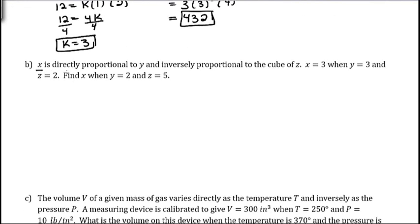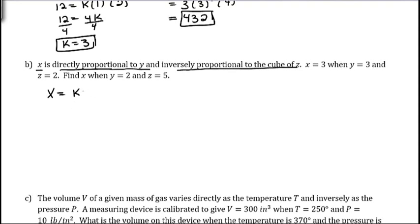Our next one: X is directly proportional to Y and inversely proportional to the cube of Z. So X equals K. It's directly proportional to Y, so that's K times Y. And inversely means you divide by the next thing, and that's the cube of Z, so Z cubed.